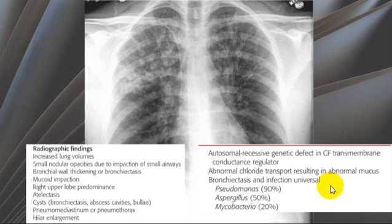The radiographic findings of cystic fibrosis include increased lung volume, small nodular opacities due to impaction of the small airways, bronchial wall thickening or bronchiectasis, mucoid impaction, right upper lobe bronchial prominence, atelectasis, and cysts either due to bronchiectasis, lung abscess, or bullae, as well as pneumomediastinum, pneumothorax, and hilar enlargement.